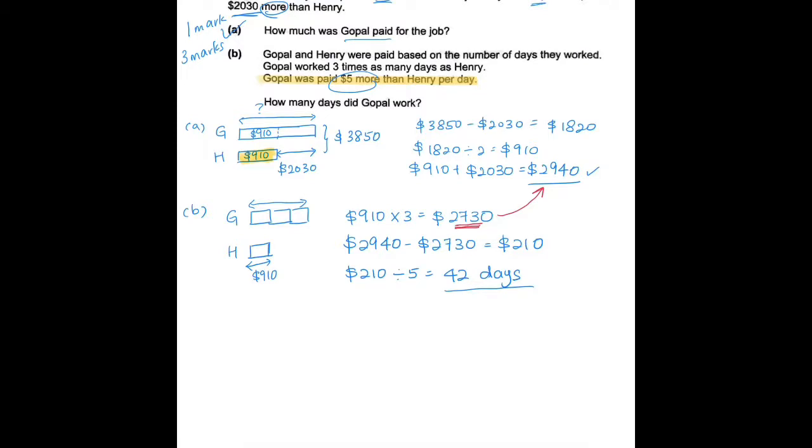Now if you're doubting yourself and you think that maybe this might not be right, we can always do a quick check. So I'm going to write my check here in green. If Gopal worked 42 days, technically, based on this line here, Henry would have worked 14 days.